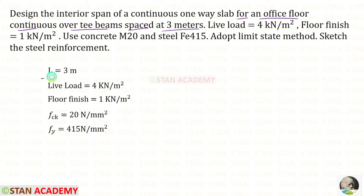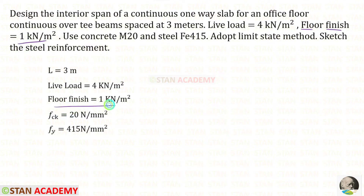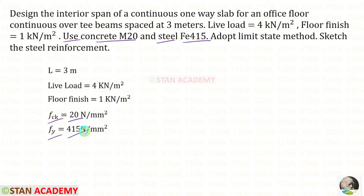The span L is given as 3 meters. Live load is equal to 4 kilonewton per meter square. Floor finish is 1 kilonewton per meter square. Use concrete M20, where fck is 20, and steel Fe 415, where fy is 415.